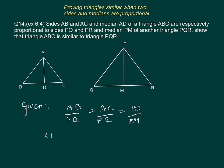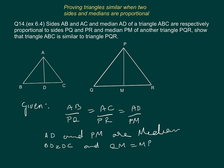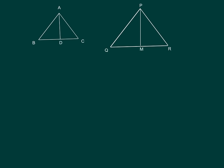AD and PM are medians, implying that BD = DC and QM = MR. Let us recall the various rules we have to prove the two triangles similar. We can use AAA, AA, SSS, or SAS.